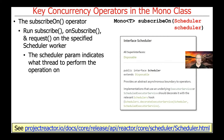There's an interface called Scheduler, and there's a utility class called Schedulers that has a bunch of factory methods that return different types of schedulers. So there'll be schedulers that run in a single thread, schedulers that run in a pool of threads, a whole bunch of different ways of doing this. We'll talk more about those in later lessons.